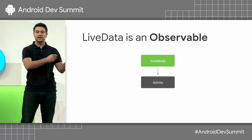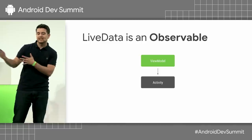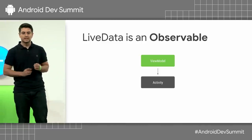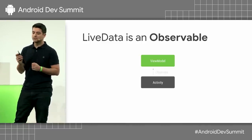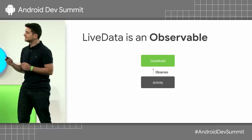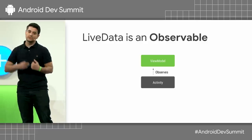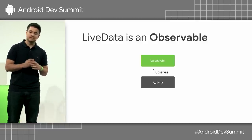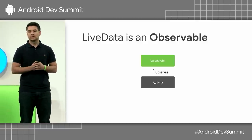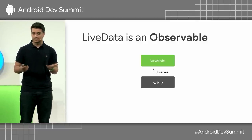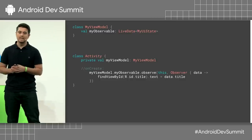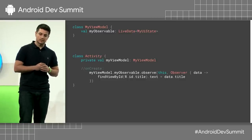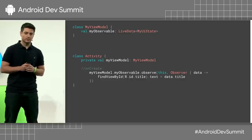So how do we communicate? How do we send data from the ViewModel to the activity? Instead of doing that directly, we're going to let the activity observe the ViewModel. And for that, we're going to use observable LiveData.